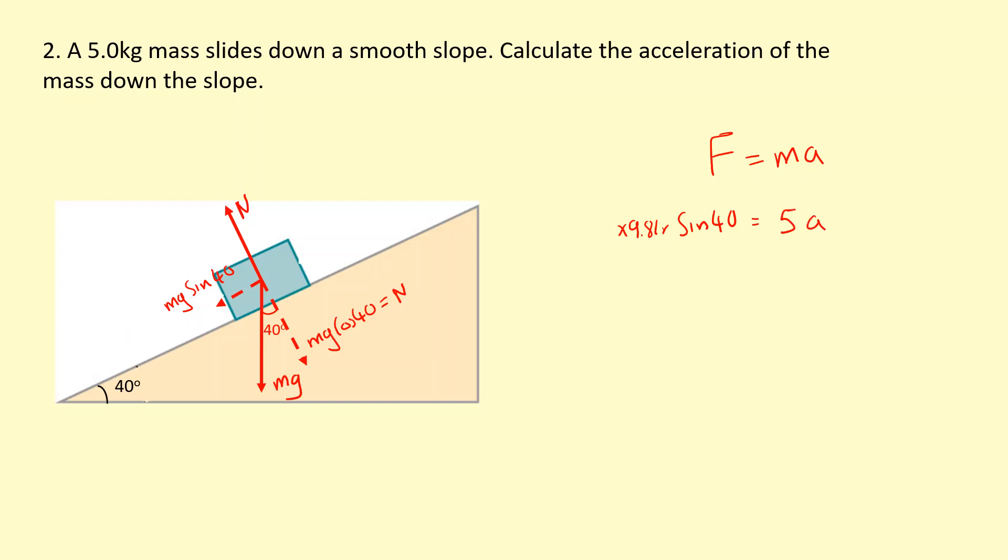The 5s, the mass actually will cancel out, so it doesn't actually matter. It's not going to affect anything. So the acceleration is going to equal 9.81 times sine 40, which gives me 6.31 meters per second squared.